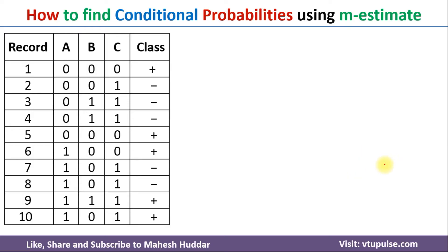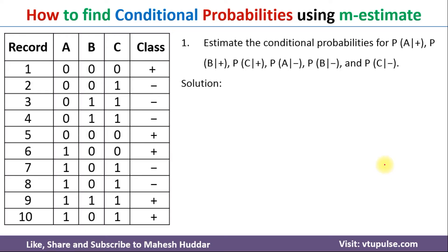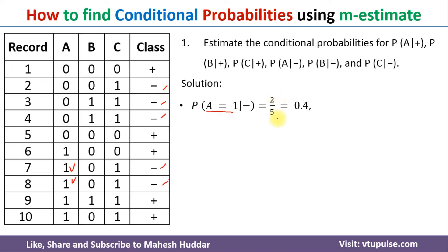First we will start with finding the conditional probabilities using the normal approach. The first conditional probability is probability of A equals one given negative. Because the given is negative, we need to consider only negative examples here. We have five negative examples. Out of five negative examples, we need to consider only examples where A equals one. There are only two such examples, so the probability of A equals one given negative is two by five.